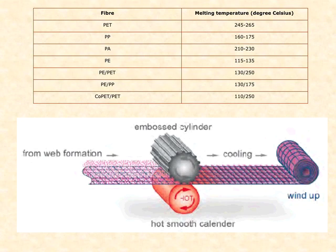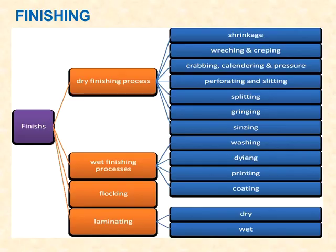In finishing, two main types are used: dry finishing and wet finishing. In dry finishing, processes include shrinkage, draping, curving, calendering, and perforating. In wet finishing, processes include washing, dyeing, printing, coating, and laminating finishes, applied according to the fabric and application requirements.